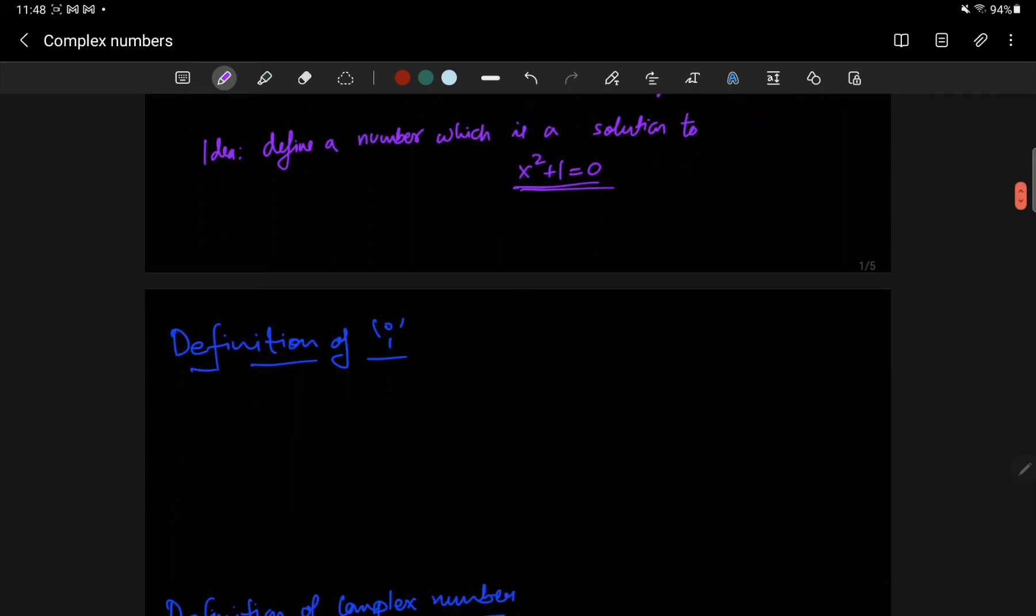And that solution is called, or is written as i. i, which stands for iota or imaginary, is defined as a solution. So i is a solution to x squared plus 1 equals 0. What does that mean? That means if I plug in i, then this should be true.